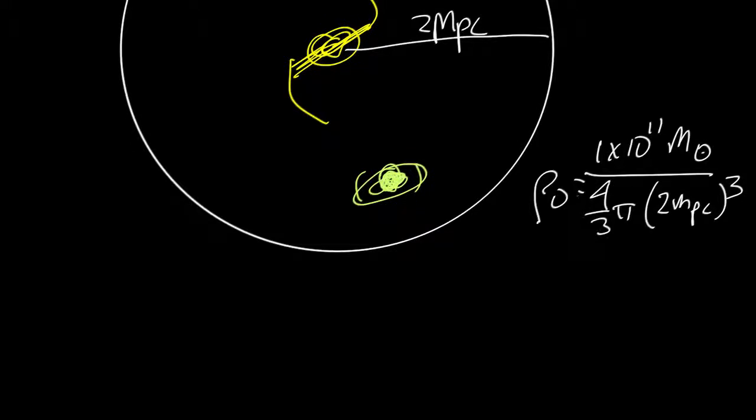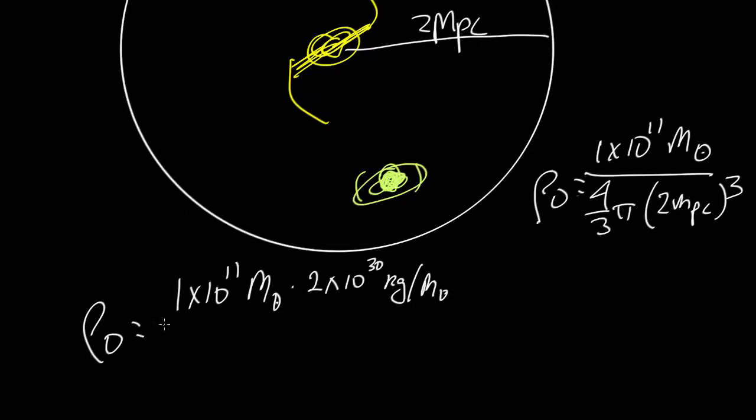Now those are not particularly useful units, so let's convert into MKS. So we get rho naught is equal to 1 times 10 to the 11 solar masses, and there are 2 times 10 to the 30 kilograms per solar mass. So that's the top part of the equation.